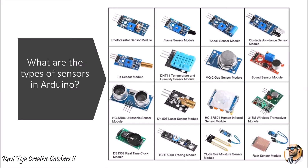Now let's look at the different types of sensors. There are hundreds of sensors that can be used with Arduino. Some of them include: a photo resistor sensor module, flame sensor, shock sensor, obstacle avoidance sensor (also called IR sensor), tilt sensor, DHT digital humidity temperature sensor, MQ2 gas sensor, sound sensor, ultrasonic sensor HCSR04, laser sensor module, and a human infrared sensor module. We also have wireless transceiver modules.